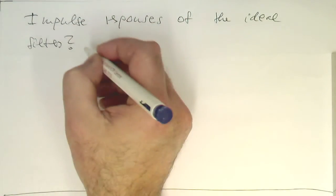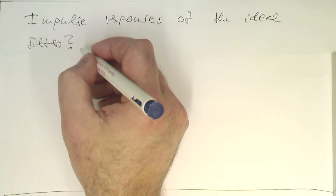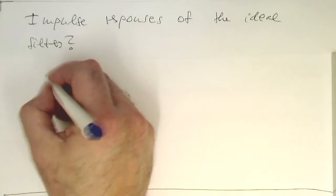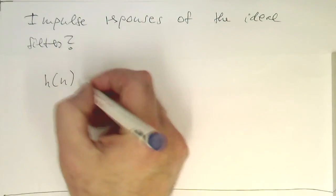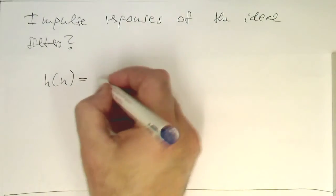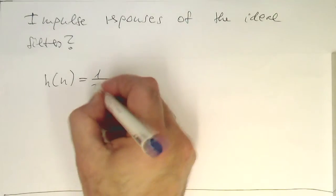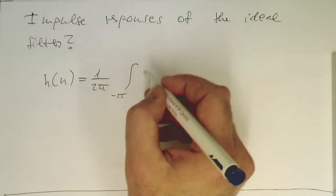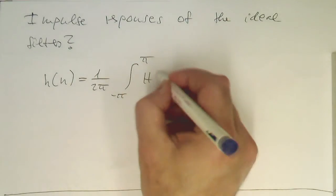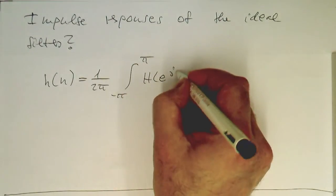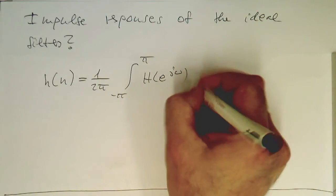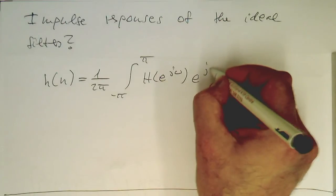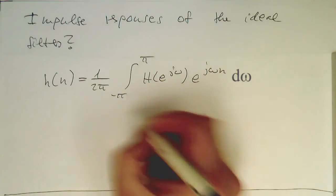So how do we calculate them? And that's pretty easy, because we know that our h of n, this is calculated as 1 over 2 pi, and then minus pi to plus pi, and then h to e to j omega, and then e to j omega n.